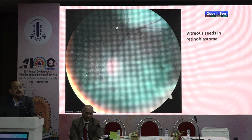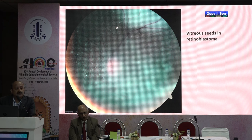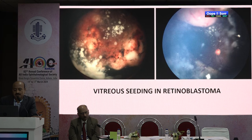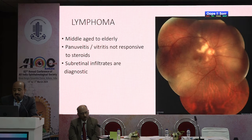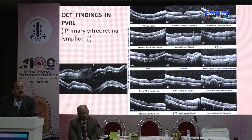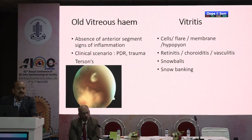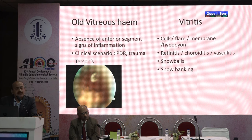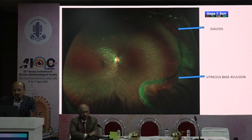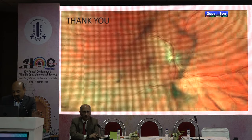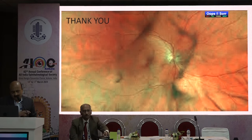At extremes of age, beware of malignancies. A young child with whitish vitreous opacities may actually have vitreous seeds from retinoblastoma — you can see the retinoblastoma lesion on fundus examination. In elderly or middle-aged patients, subretinal infiltrates and vitreous opacities can be a presenting feature of lymphoma, with OCT signs helping reach a diagnosis alongside histopathology. Differentiating old vitreous hemorrhage from vitritis is key — if the anterior segment is absolutely quiet, it is more likely a hemorrhage. A retinal dialysis with vitreous base avulsion is another cause of vitreous opacities.